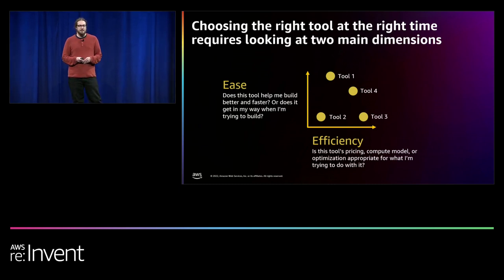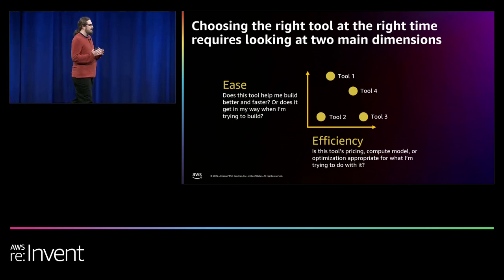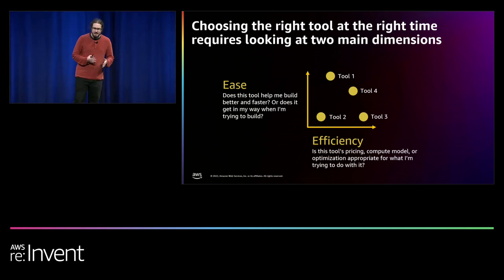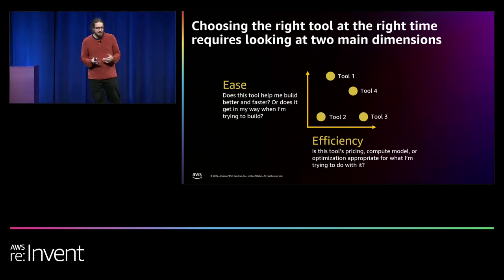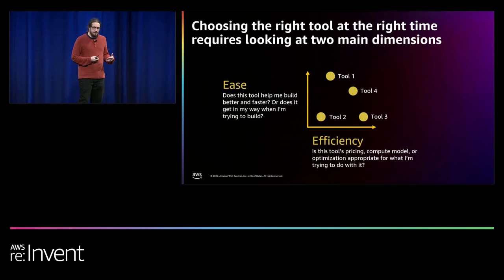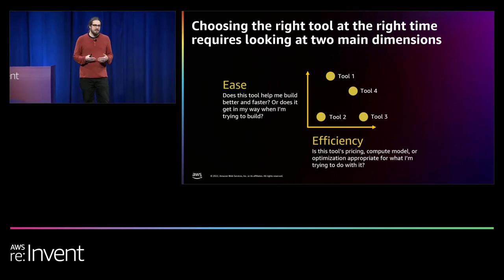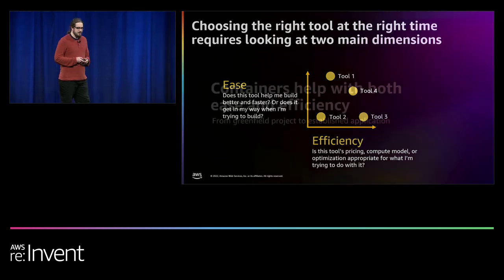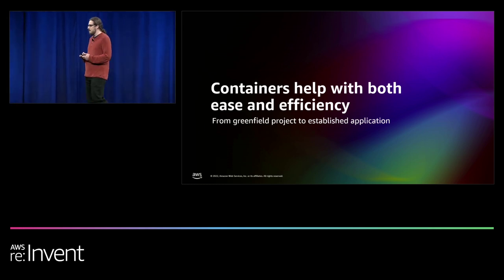When looking at ease and efficiency — the two dimensions we're going to talk about — the main thing is finding the right spot on these dimensions for where your software and development cycle currently is. The questions I ask are: does this tool help me build better and faster right now, or have I outgrown it? In terms of efficiency, is this tool's pricing, computational model, or optimization appropriate for where I am in terms of scaling? I believe containers help with both ease and efficiency, from a brand new greenfield project up to established software that's been around for decades.